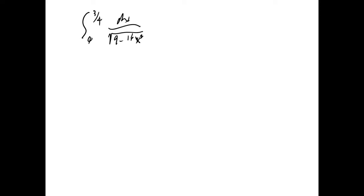If you look up the page, that kind of looks like an inverse sine — but not quite. We have to do some work to make it look like that. What kind of work? Substitution. Ultimately, we want 9 minus 16x² to become 1 minus u². If we had that, this would be an inverse sine perfectly.